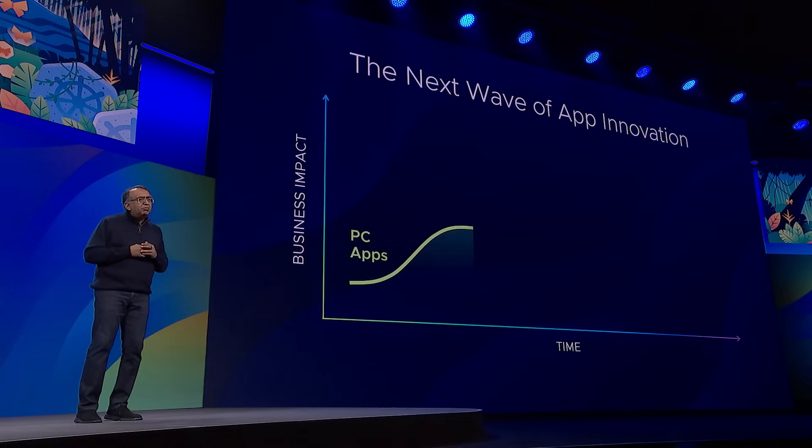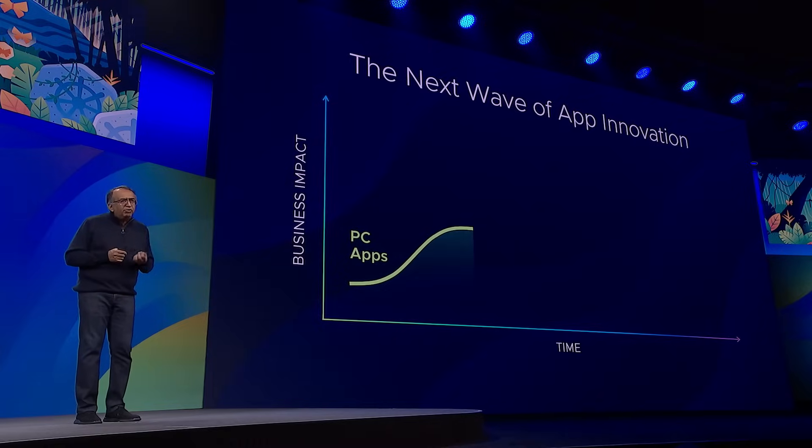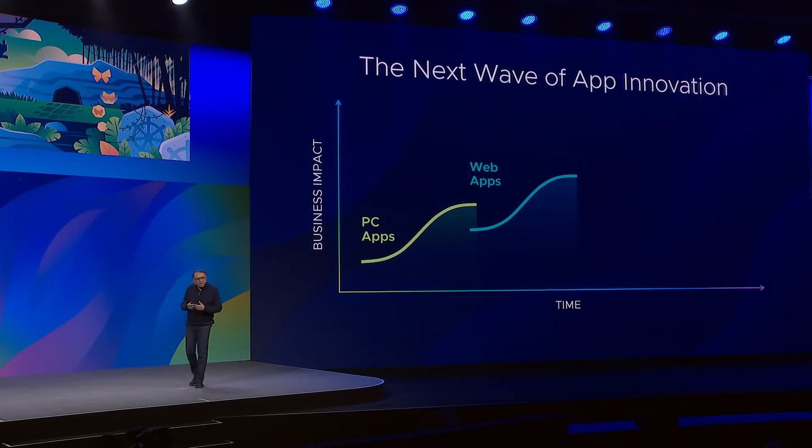Let's look back 40 years ago when the PC first came about. The PC delivered 100x or more improvement in the economics of computing. And that's why it was possible to reimagine enterprise applications and consumer applications, and a whole new wave of applications got built. Similarly, when the web came about, there was 100x or more improvement in communication costs and access. So this again sparked a whole new wave of application innovation which we are experiencing even today.